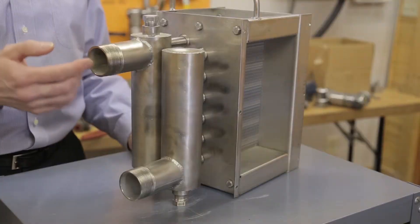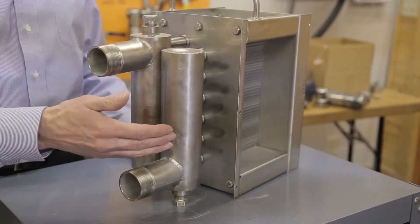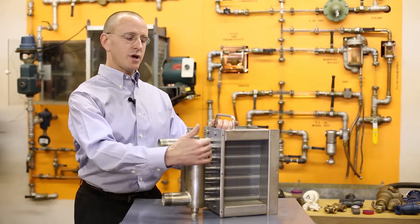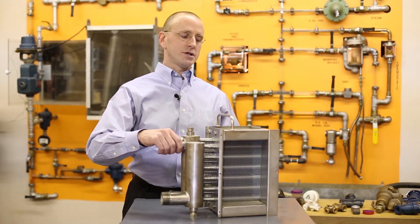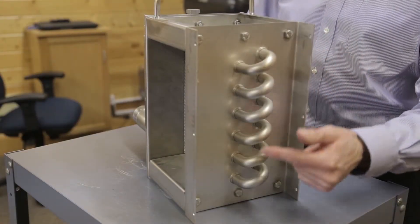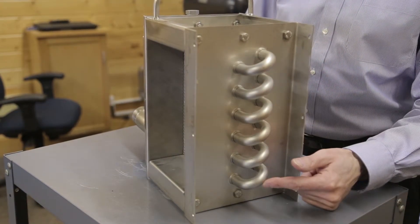The pressure side consists of the connections and the header. There's return bends back on this side back here to circuit the fluid back to the headers.